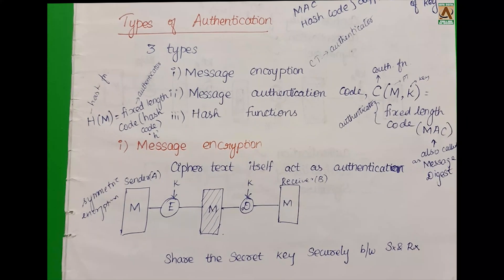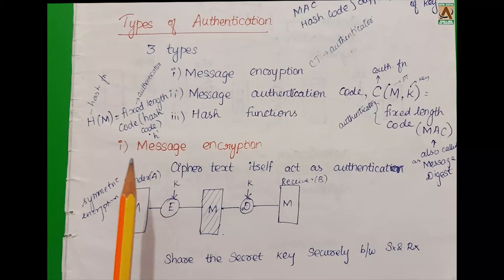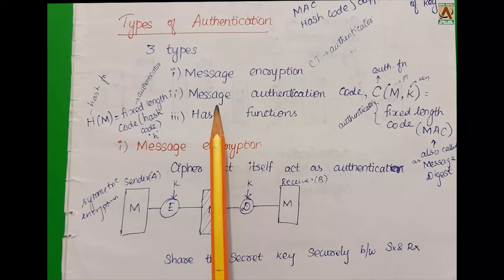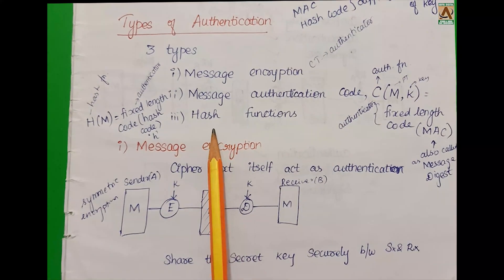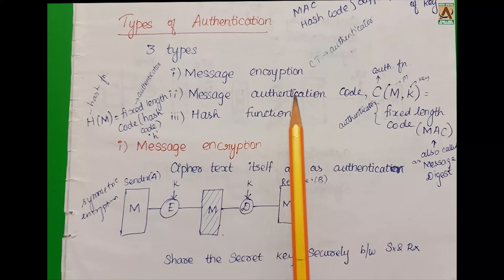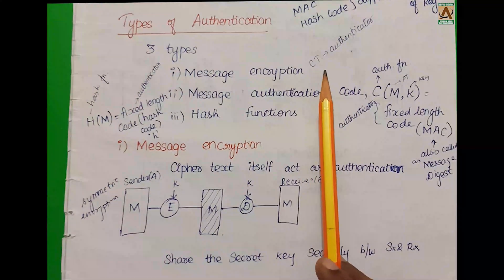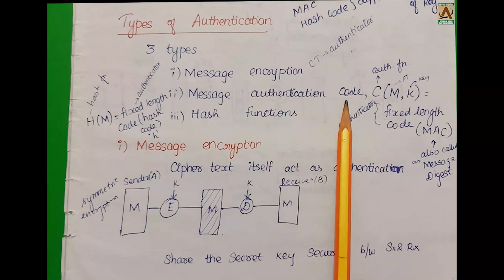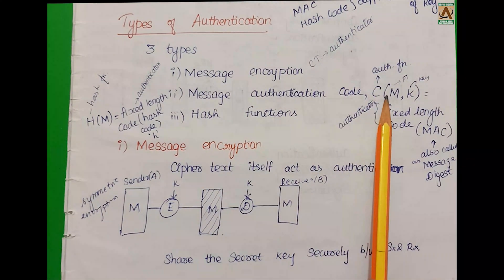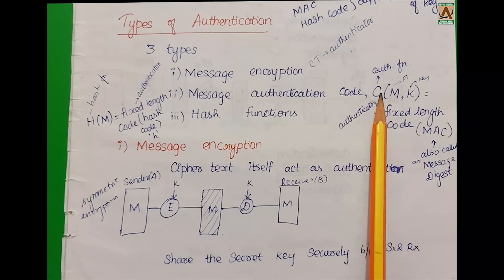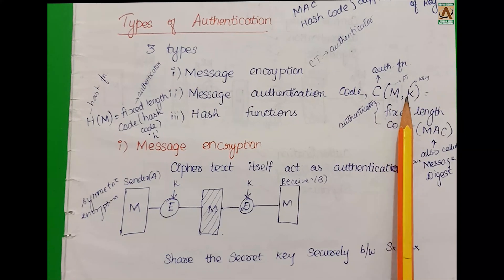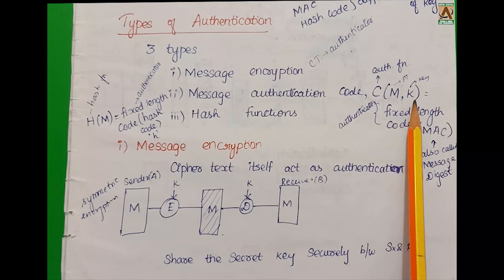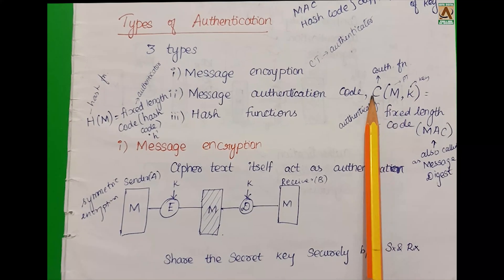In Types of Authentication, we have 3 types: Message Encryption, Message Authentication Code (MAC), and Hash Function. The Authentication Function is the function we use for authentication, and it takes a message and a key as input. Using plaintext and a key in the function, we can provide authentication.